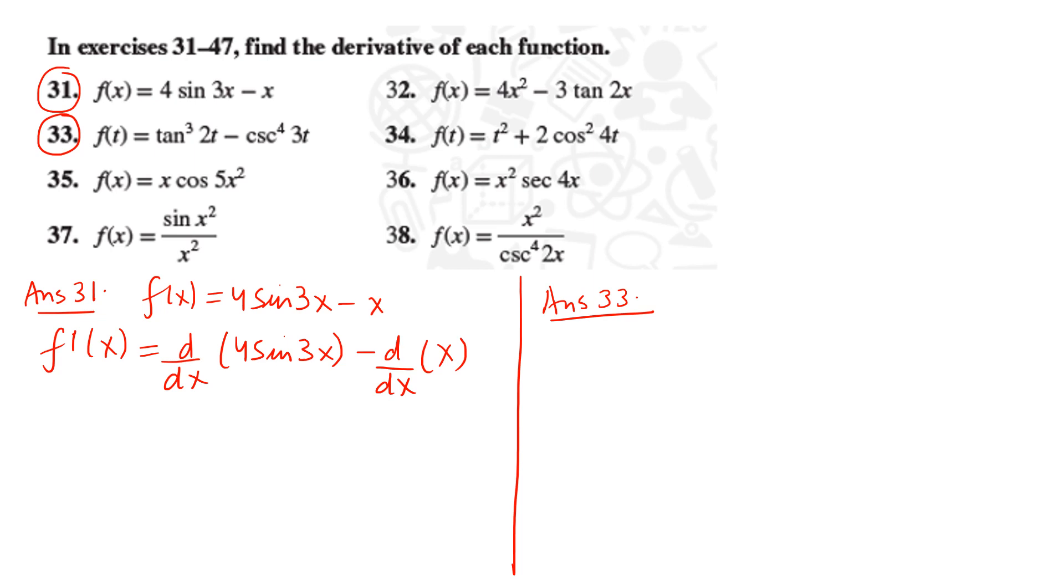So d by dx of 4 sin 3x minus d by dx of x. Two functions are there. I distribute the derivative, and 4 is a constant, it comes out. So 4 times d by dx of sin 3x, and derivative of x is 1. The derivative of sin is cos. Now you do the derivative of 3x which is 3 minus 1. So 4 times 3 gives you 12 cos 3x minus 1. This is the derivative of 31.